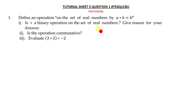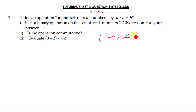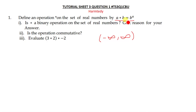Real numbers range from negative infinity to positive infinity. So when they ask if star is a binary operation on the set of real numbers using this operation, you test it by working with what you've been given.